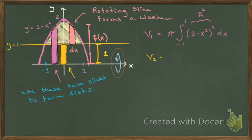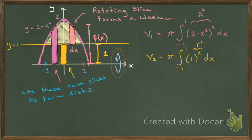Next I do a very similar thing for the smaller disk — what I'm punching out — drawn in yellow. V2 is the volume generated by rotating that yellow slice around the x-axis. The integral is again from minus 1 to 1, and that radius is only 1: the height of y equals 1, which is my little r.